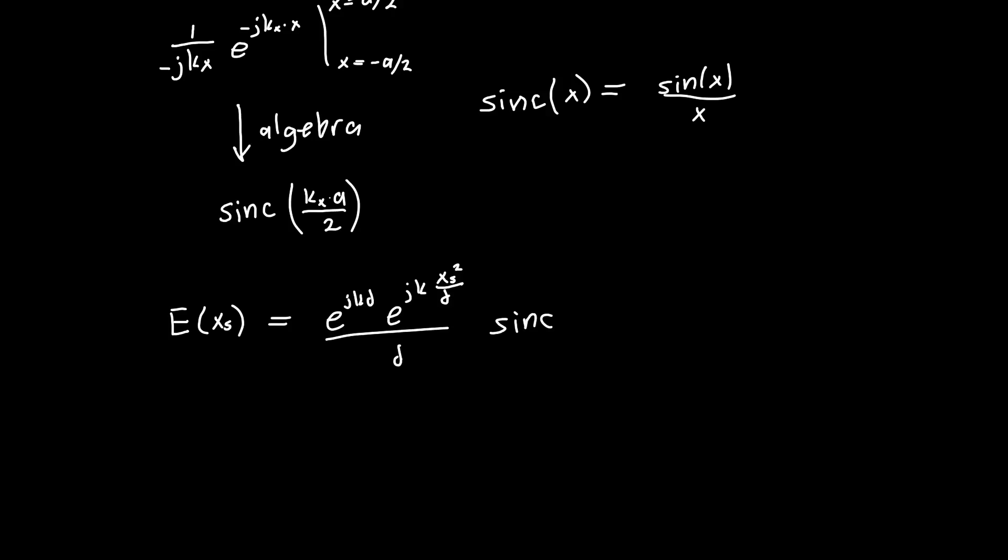And then the Fourier transform, which is just sinc of kx. Now we defined kx previously, we actually defined this to be our original wave number k multiplied by xs, the coordinate on the screen, divided by d. And so we can put that in, where k is the wave number of our electromagnetic wave, so 2 pi over lambda. So sinc of k times xs, and then we've got an a over 2 times d.